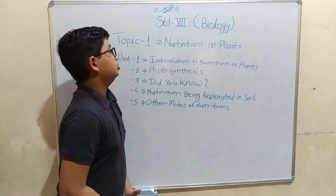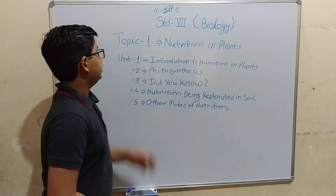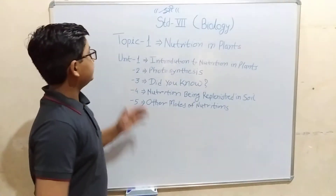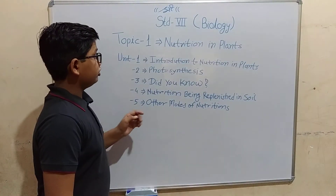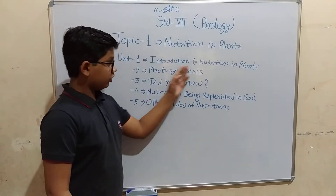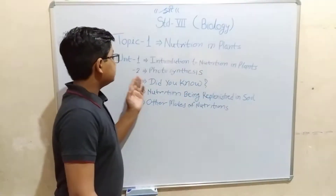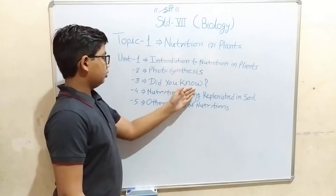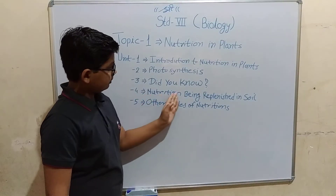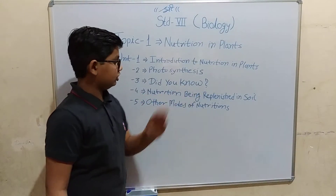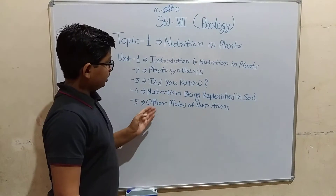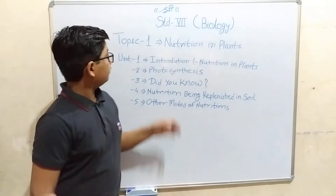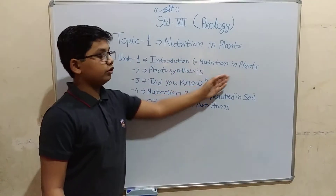We will see biology of standard 7, topic 1: nutrition in plants. In this topic there are five units. The first unit is introduction to nutrition in plants, second is photosynthesis, third is 'did you know', fourth is nutrition being replenished into soil, and the last is other modes of nutrition.